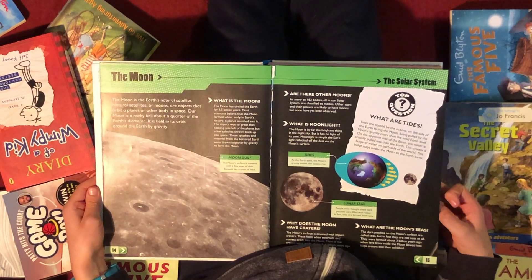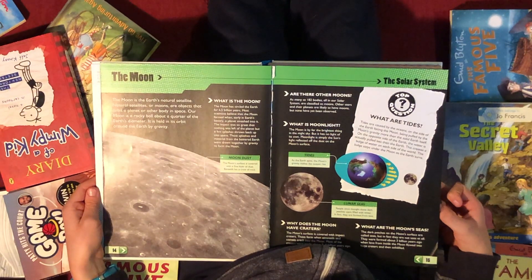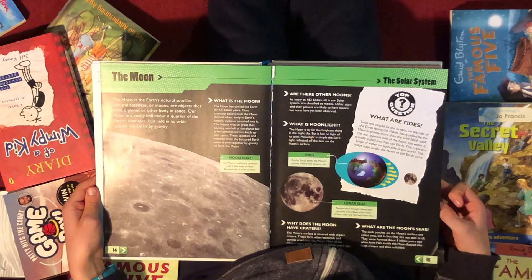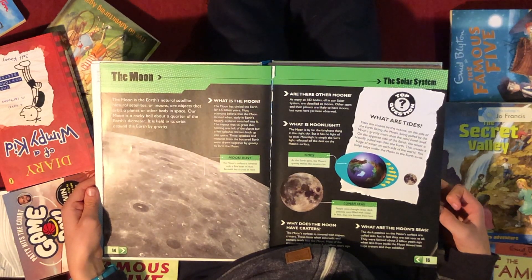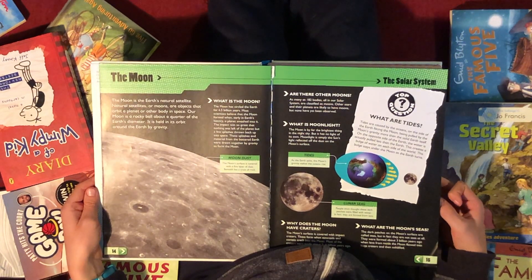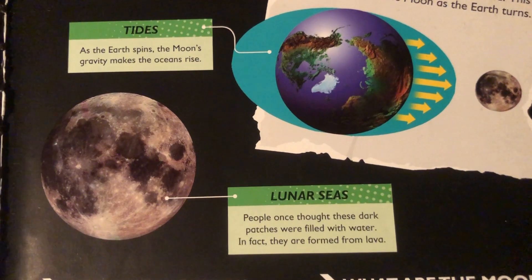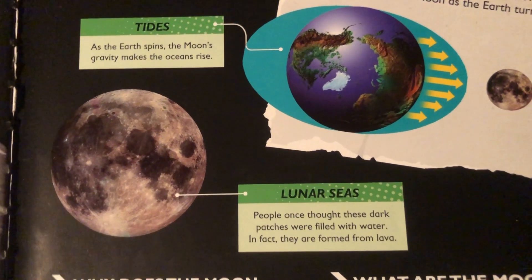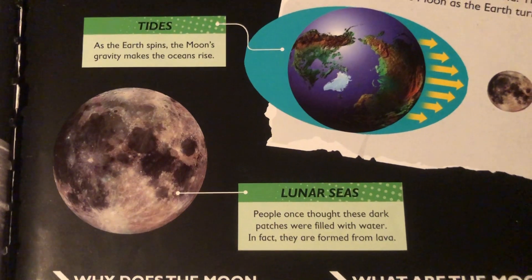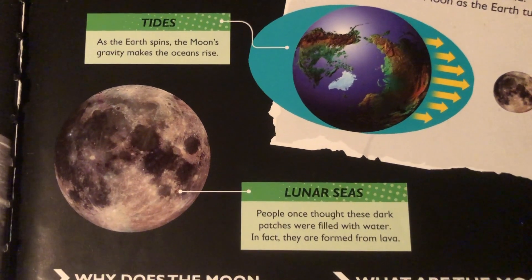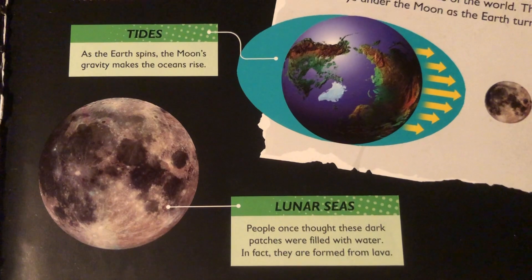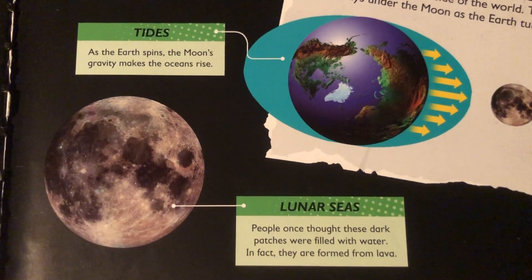What are tides? Tides are caused by the oceans on the side of the Earth facing towards the Moon being pulled by the Moon's gravity more than the solid Earth itself. On the opposite side of the Earth, the water is actually pulled less than the Earth. This creates a bulge of water on each side of the world, and this bulge stays under the Moon as the Earth turns.